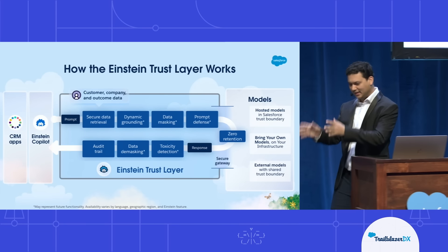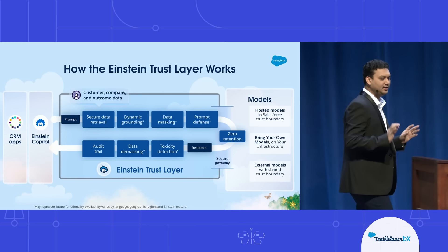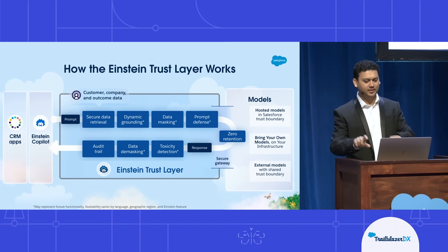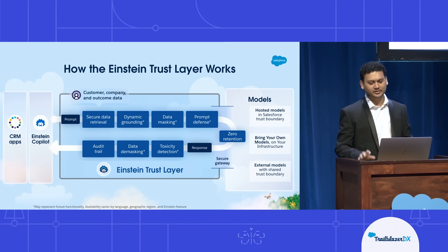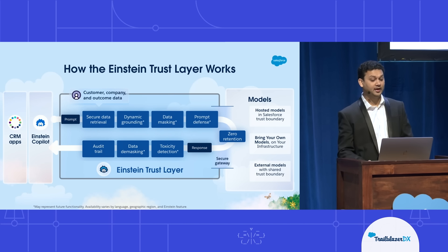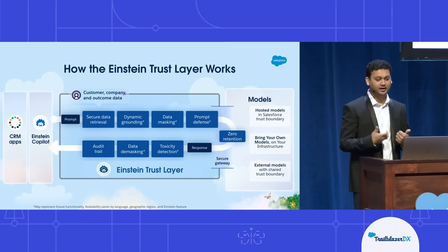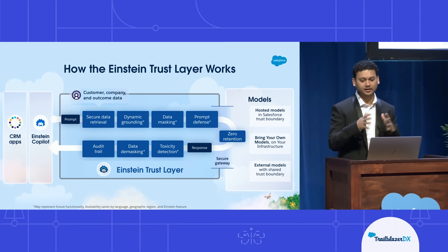The problem with LLMs is that by default they are not secure, so adopting them for enterprise is a lot of work. Our team — Gary's team and our security team — has built the Einstein Trust Layer. In simple terms, it makes LLMs ready for enterprise: reducing hallucinations, zero data retention so prompts aren't stored, grounding data, and reducing toxicity — all the things needed to adopt LLMs for B2B applications.